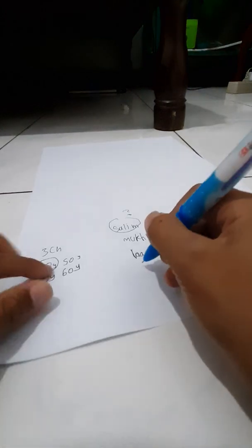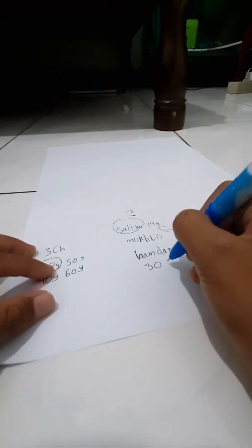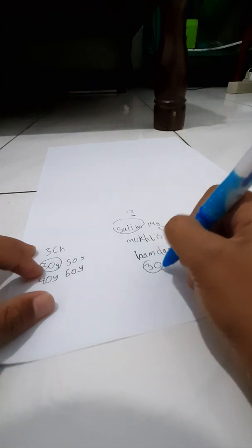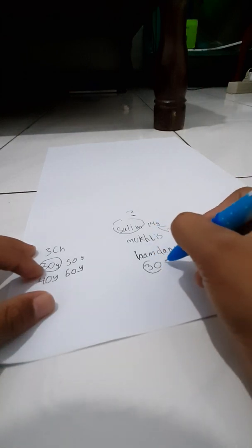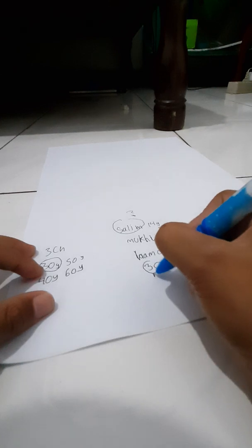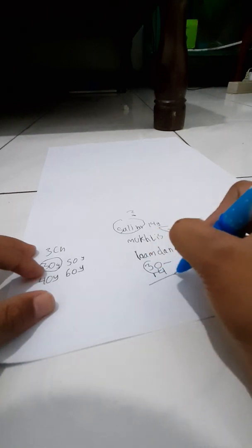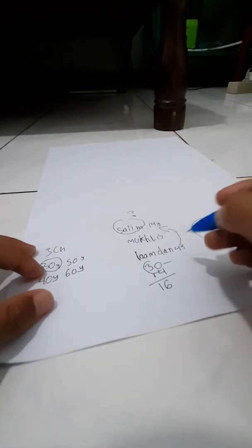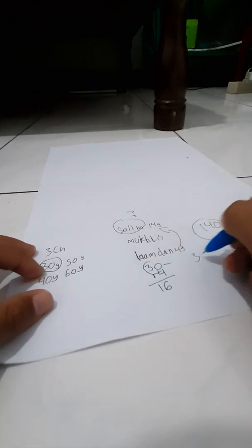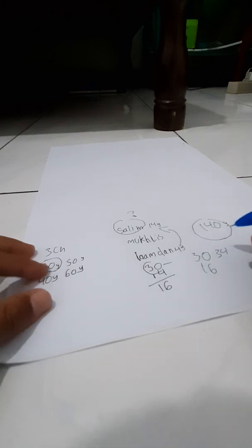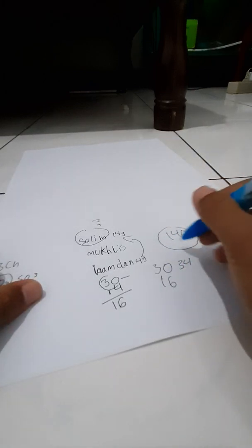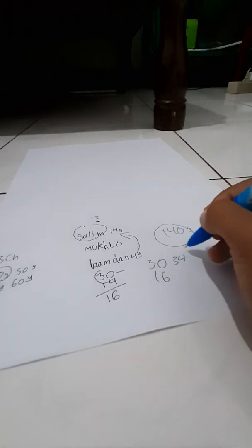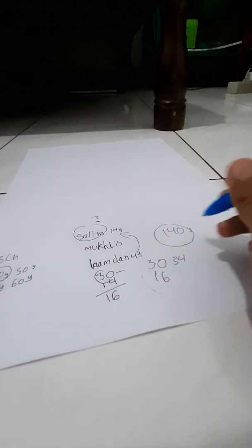So if Salim was 30 years old, since Salim is 14 years older than Mukhlish, we could minus it by 14. If we minus it by 14, that would be 16. And Hamdan is 4 years older than Salim, so that's 34.